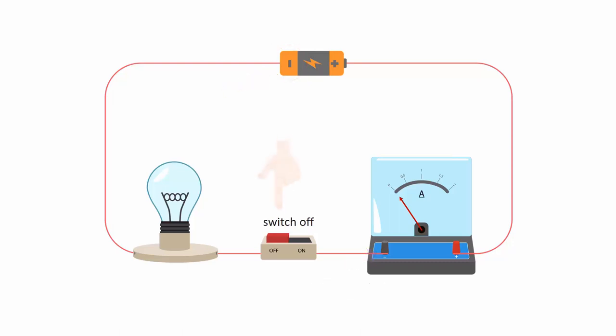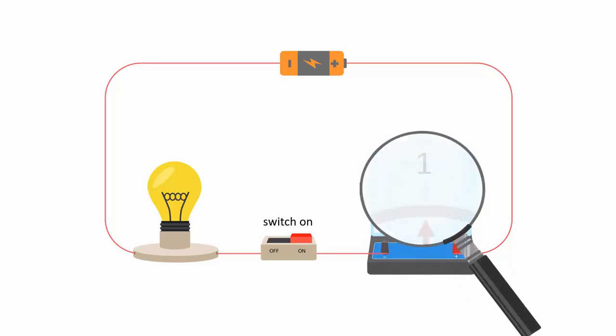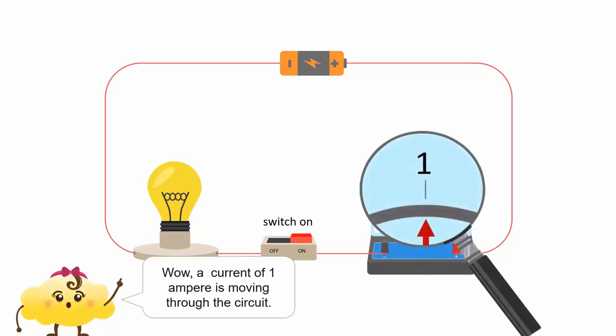When the switch is closed, the deflection of the needle shows how much current is flowing through the circuit. A current of 1 ampere is moving through the circuit.